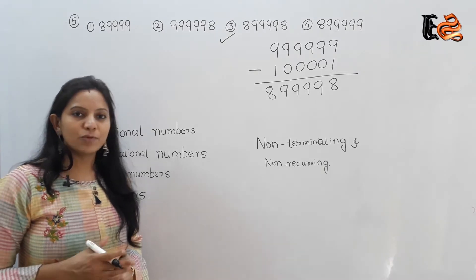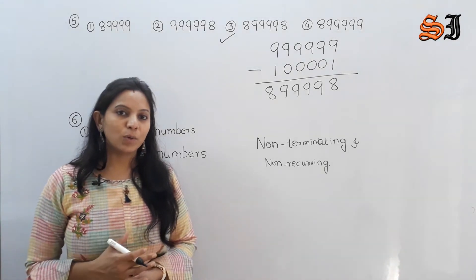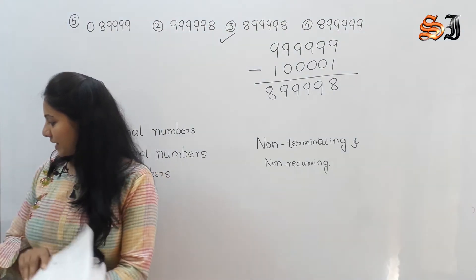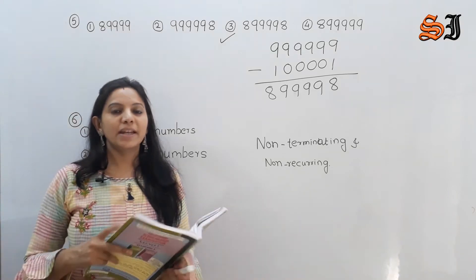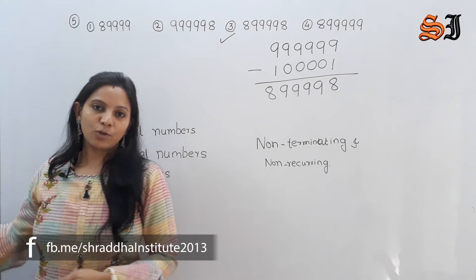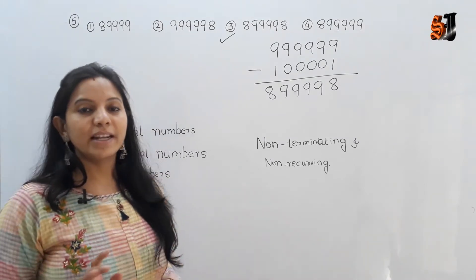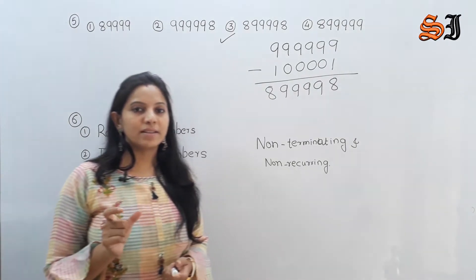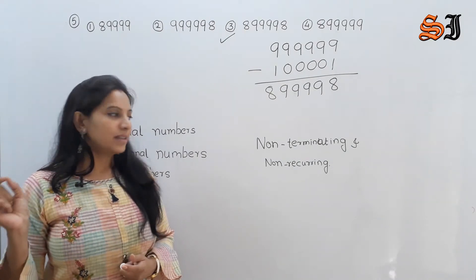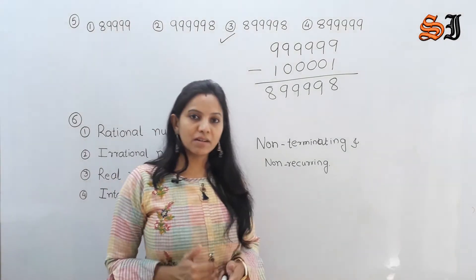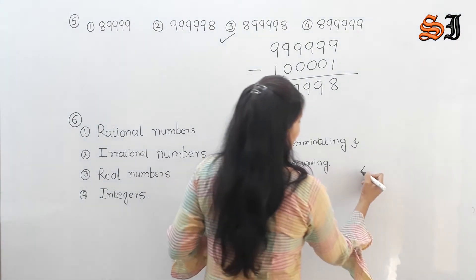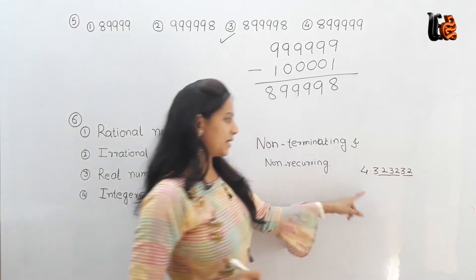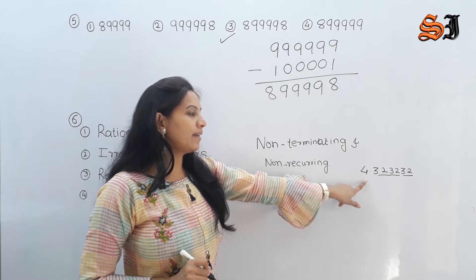Non-terminating means the division never ends. Terminating means the division ends and the remainder is 0. Non-terminating means the number keeps going. In decimal form, non-terminating recurring means the digits repeat — for example, 4.323232... — this pattern repeats, so this is non-terminating and recurring.